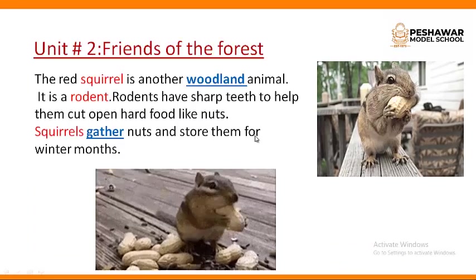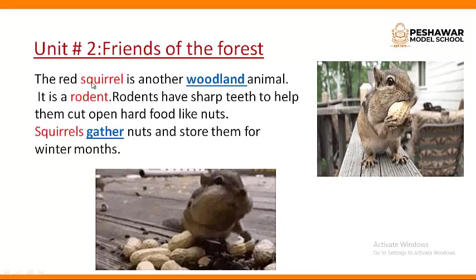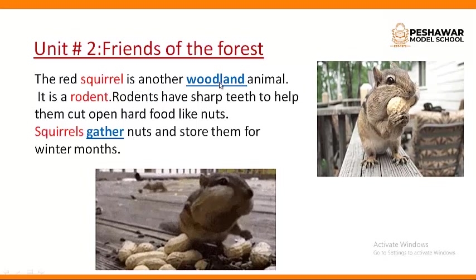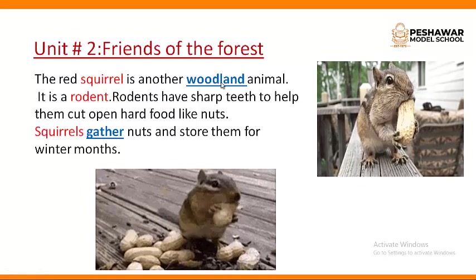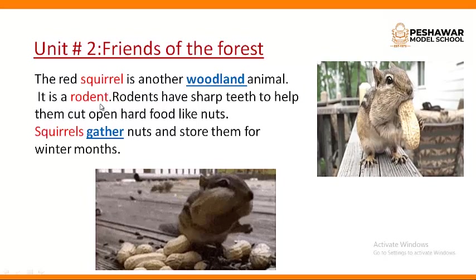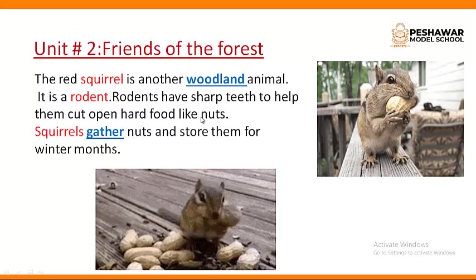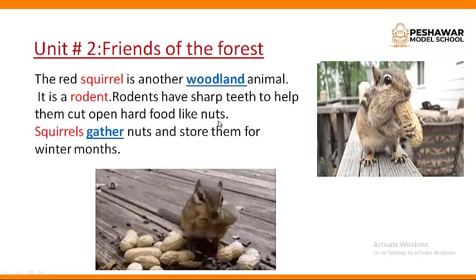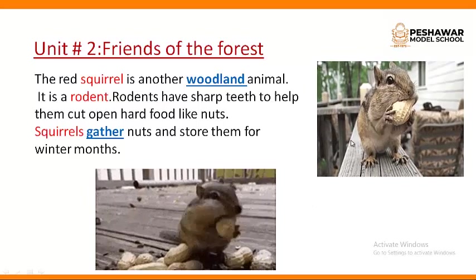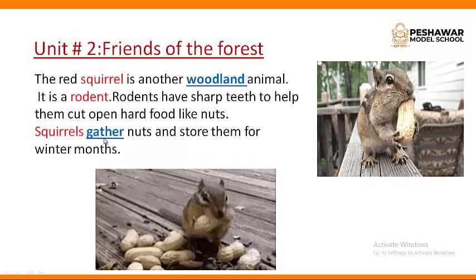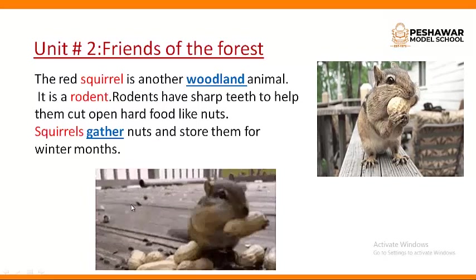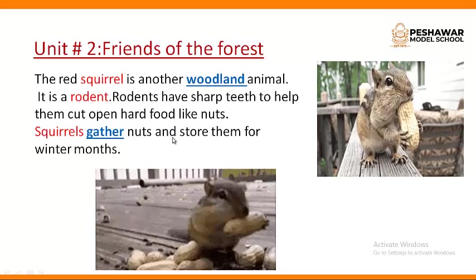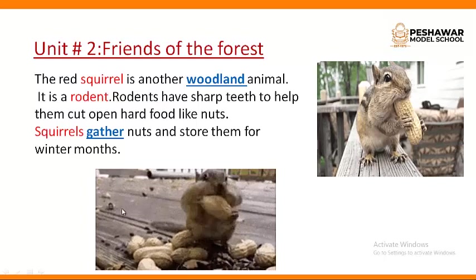Now let's move to the squirrel. The red squirrel is another woodland animal — woodland means they like to live in the woods, which means the forest. So they are also friends of the forest. The squirrel is a rodent. Rodents have sharp teeth to help them cut open hard food like nuts and walnuts. You can see the squirrel cutting a peanut. Squirrels gather — meaning collect — nuts and store them for the winter months.